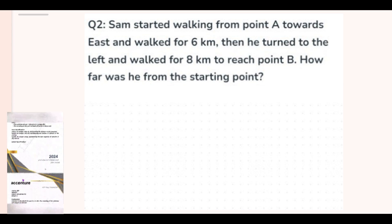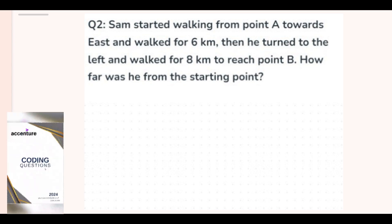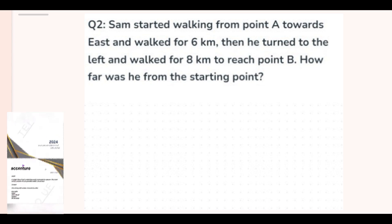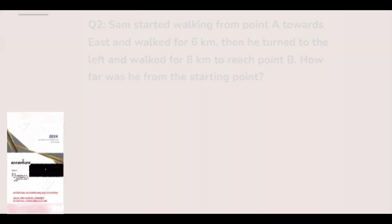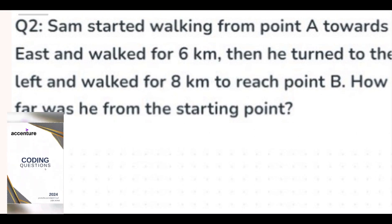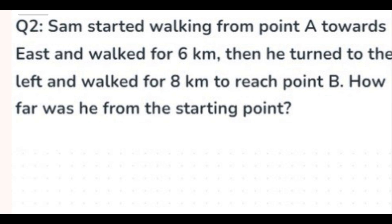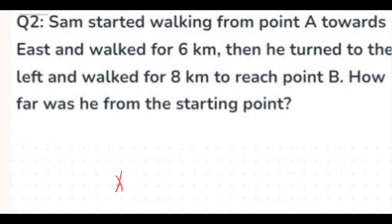The next question: please pause and try to solve before I show the solution. Sam starts walking from point A towards east and walked 6 kilometers. Then he turned to the left and walked 8 kilometers. Since he was walking east, his left side is north. So he walks 8 kilometers north to reach point B.